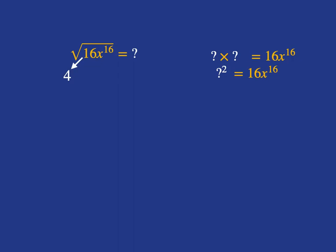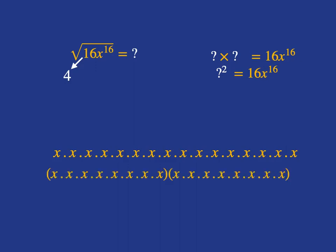But what happens when we've got x to the power of 16? What will the square root of that be? Remember, x to the 16 is 16 x's all multiplied together. We can split that into 2 groups: 8 x's multiplied together and another 8 x's multiplied together, giving us 16 x's in total. So x to the power of 8 times x to the power of 8 gives us x to the 16. So 4 times 4 gives us 16, and x to the 8 multiplied by x to the 8 gives us x to the power of 16. Therefore, the square root of 16x to the 16 is 4x to the power of 8.